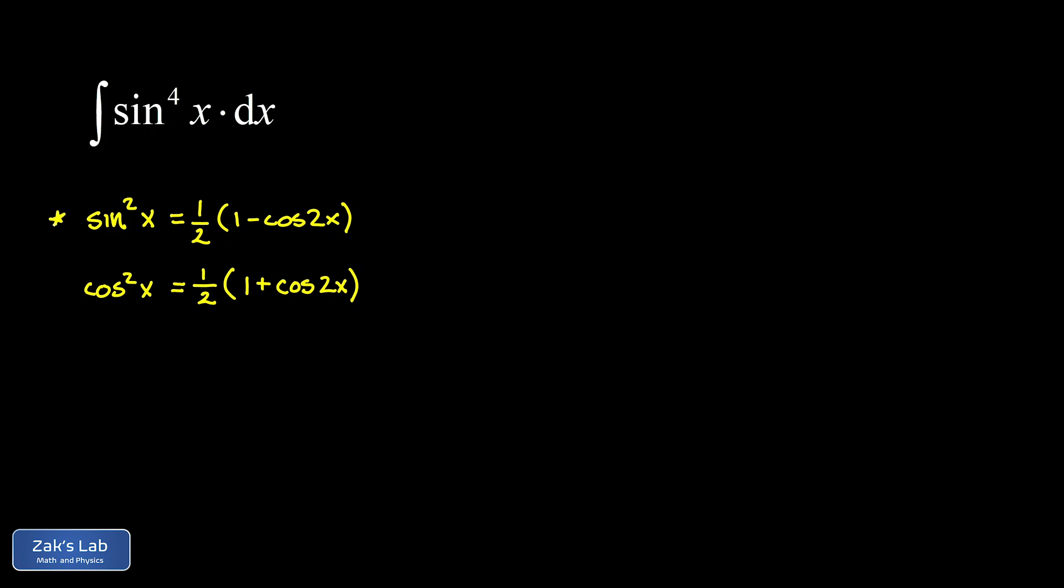Then we apply this first identity twice. We're going to replace each of those sine squared x's with a one half times one minus cosine 2x. That gives us two factors of one half which we can pull out in front as a factor of one fourth.